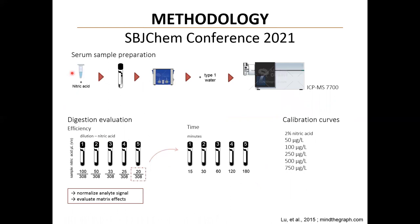Serum samples were transferred to polymeric vials and treated with sub-boiling nitric acid. The vials were heated to two water boiling points, and after digestion, all samples were added with type 1 water and injected into the ICP-MS system.